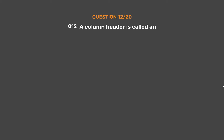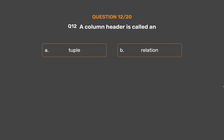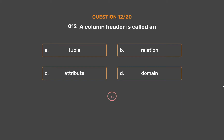Question number 12. A column header is called: Option A: Tuple. Option B: Relation. Option C: Attribute. Option D: Domain. The correct answer is Option C: Attribute.